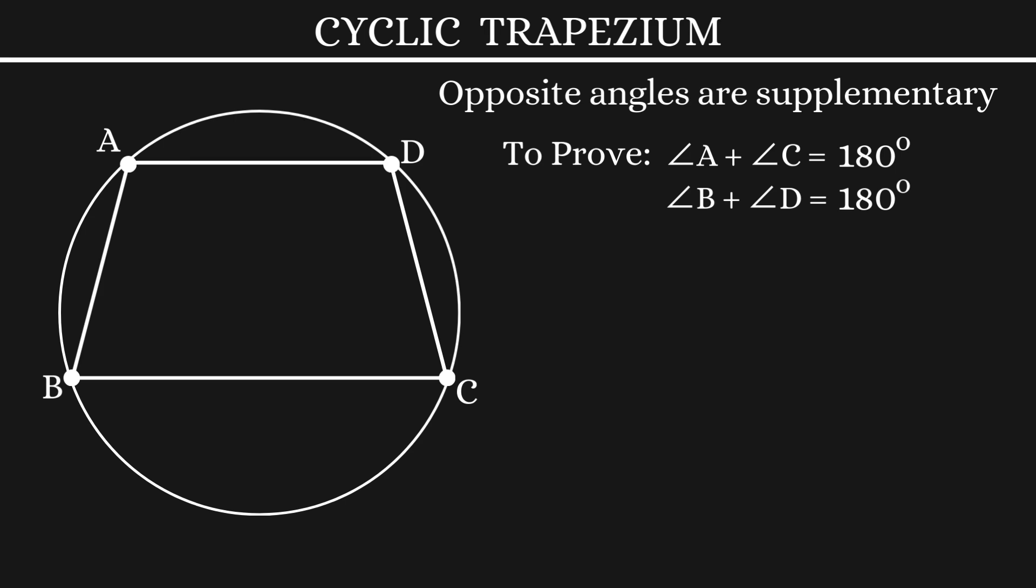To prove this, we'll first mark the circumcenter. Let's join the circumcenter with two opposite vertices, B and D. Now, let's say angle C is X and angle A is Y.